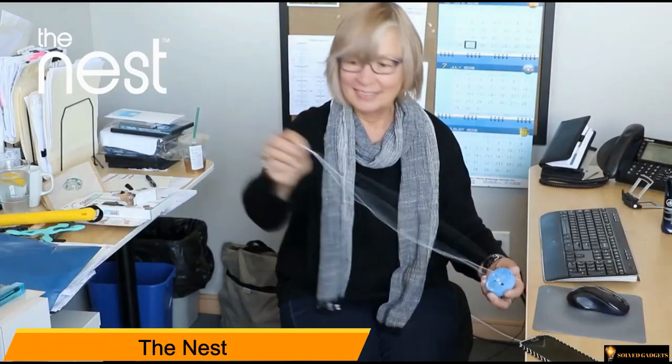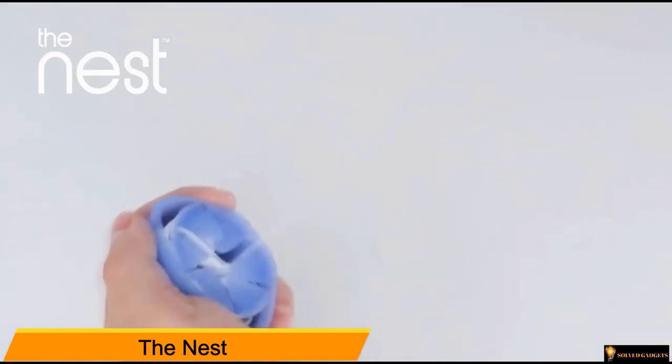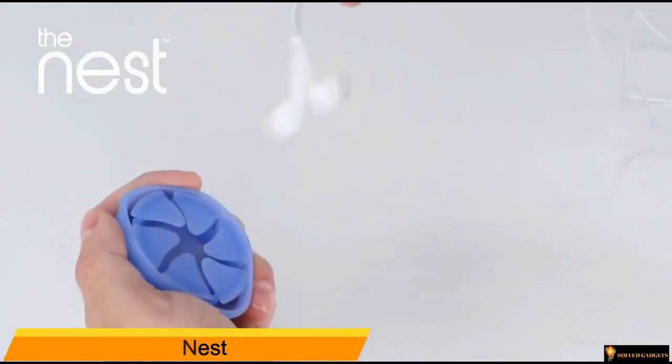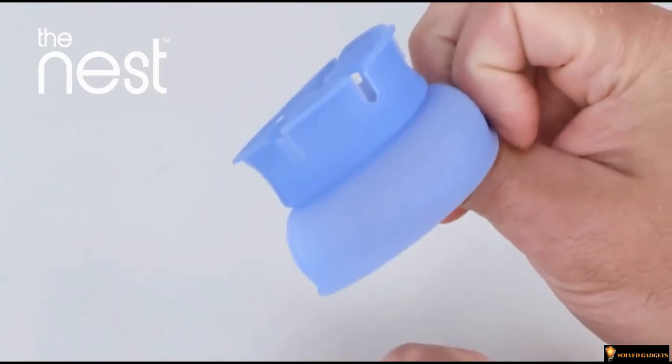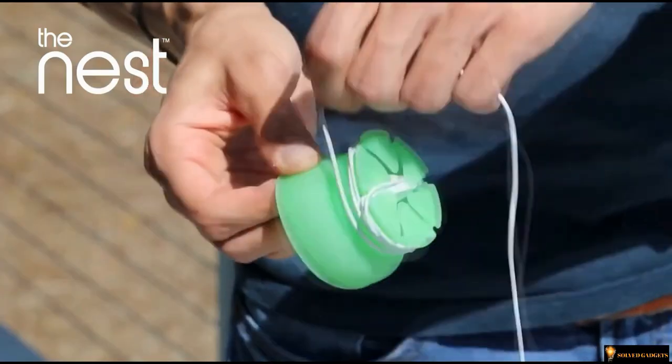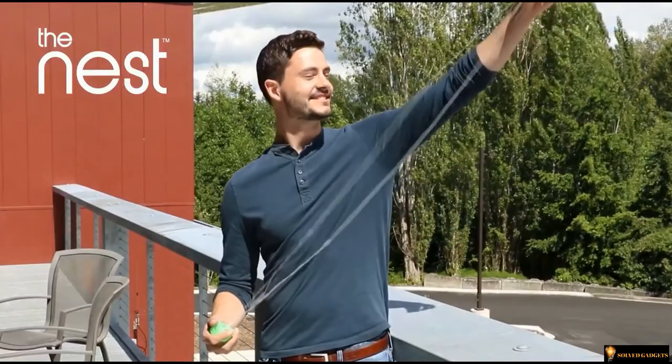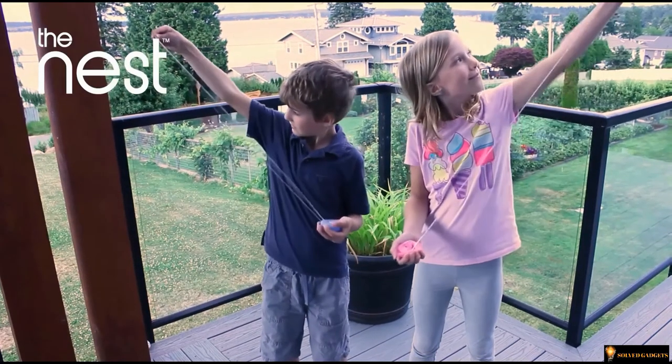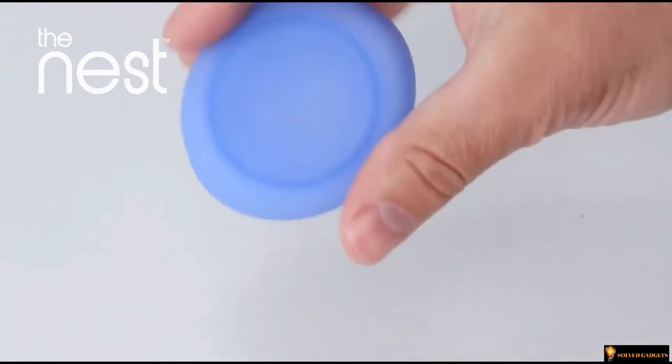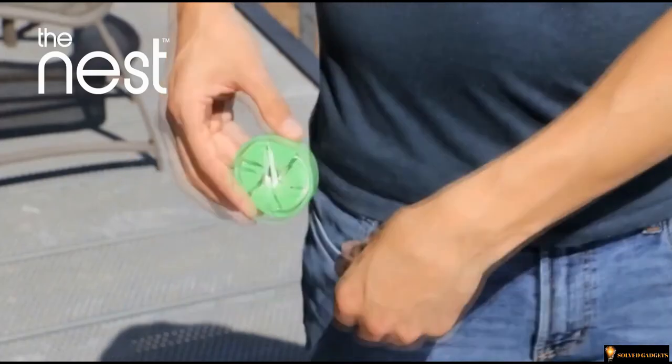The Nest Tangle-Free Earphone Case. Stores earbuds in seconds, releases earbuds instantly and tangle-free with a single pull, keeps earpieces, mics and cords fully protected, works with a large variety of earbud designs in cords up to 48 inches, compact, soft, and flexible to easily fit in pockets, purses, bags, and backpacks.